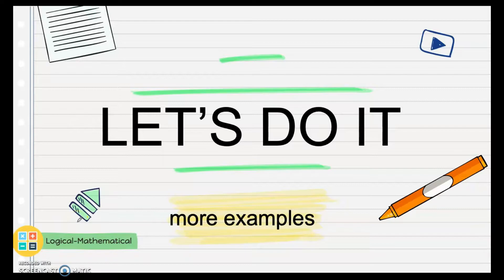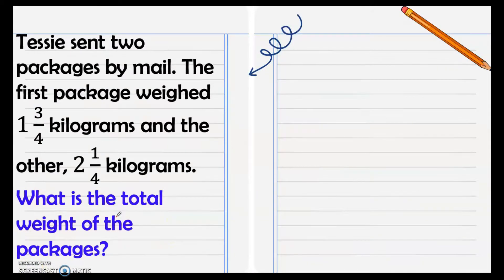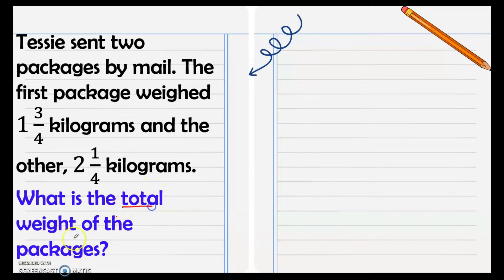Good day everyone. Today we will be dealing with applications on addition and subtraction of fractions. Let's have Example Number 1. Tesi sent two packages by mail. The first package weighed one and three-fourth kilograms and the other two and one-fourth kilograms. What is the total weight of the packages? Our keyword here is 'total weight,' therefore we need to add.